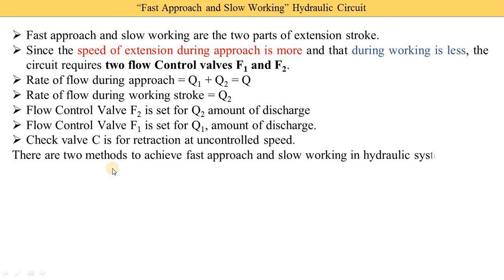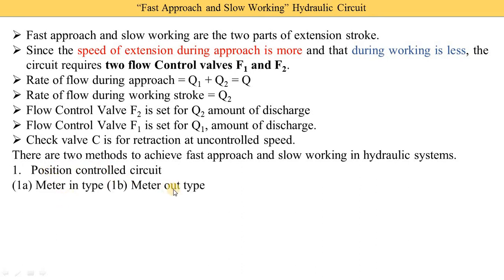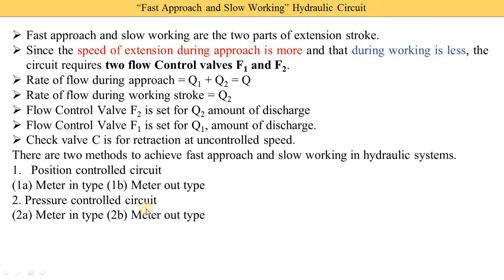There are two methods to achieve fast approach and slow working in hydraulic systems. The first is the position control circuit, which is again of two types: meter-in and meter-out. Position control uses a deceleration valve with a 2/2 directional control valve. The second method is the pressure control circuit, which uses a sequence valve, also available in meter-in and meter-out types. In this video, the position control meter-in and meter-out types are explained; a separate video covers the pressure control circuit.